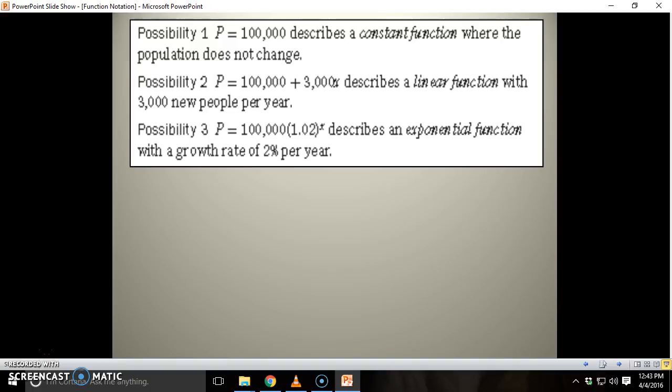So here you have three possibilities for population growth: 100,000, 100,000 plus 3,000x, and then 100,000 times 1.02 to the x, based on constant, linear, and exponential growth.